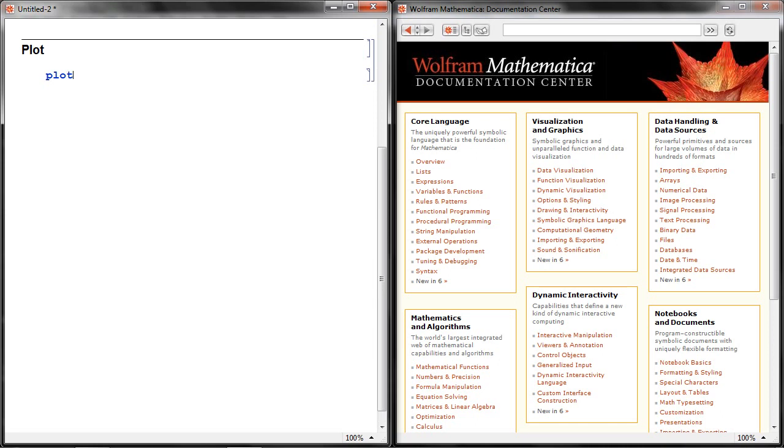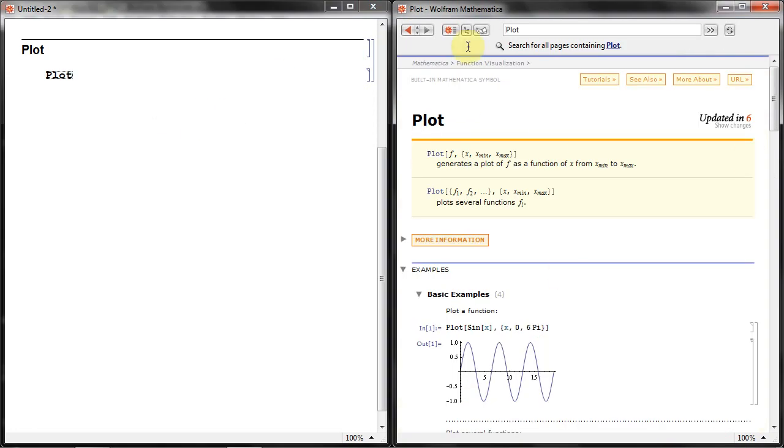Okay, now the function is called plot. Mathematica is case sensitive, so it has to be with an upper case P. Before I tell you what the function looks like, let's just take a quick look at the help file. If you click on the function, hit F1, it brings this window up.